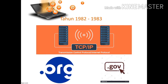Pada tahun 1982 sampai dengan 1983, terbentuklah suatu bahasa komunikasi yang merupakan bahasa dasar protokol internet, yang dikenal dengan nama TCP/IP. TCP adalah Transmission Control Protocol, dan IP adalah Internet Protocol. TCP/IP adalah gabungan dari protokol-protokol yang digunakan untuk mengatur komunikasi dari sebuah data. Setelah TCP/IP dikembangkan, terbentuklah suatu jaringan yang lebih luas daripada LAN, yaitu WAN atau Wide Area Network.